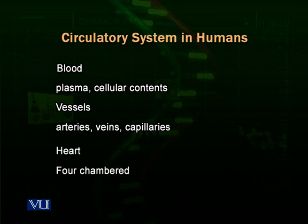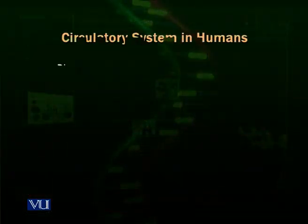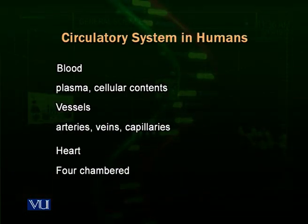Blood consists of plasma, the watery liquid fluid part of the circulatory system that transports materials from one part of the body to another, from heart to the body and from body back to the heart. Blood consists of plasma, the liquid part, and cells or cell-like materials.